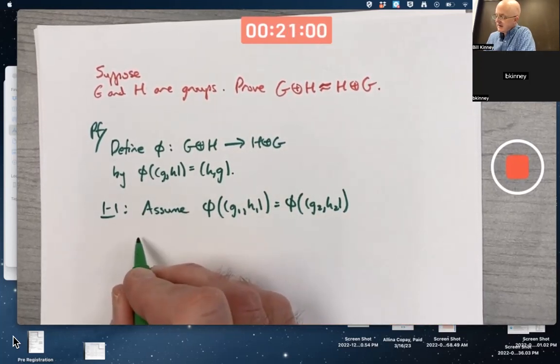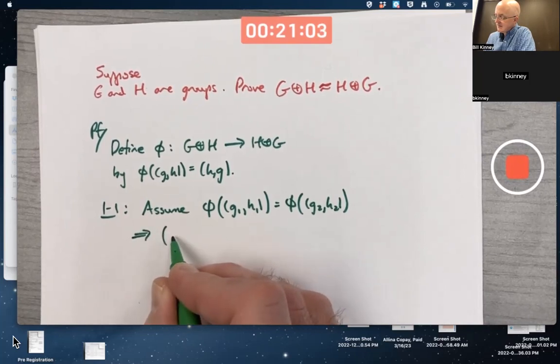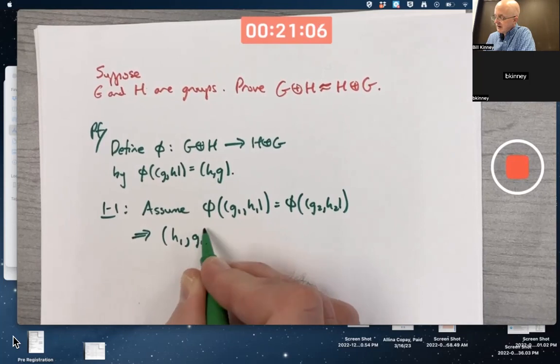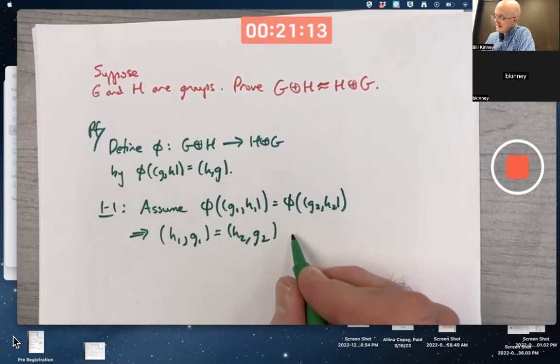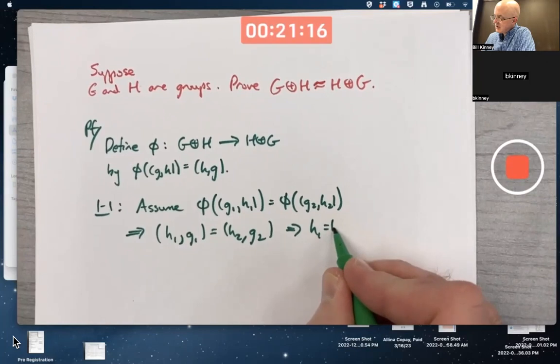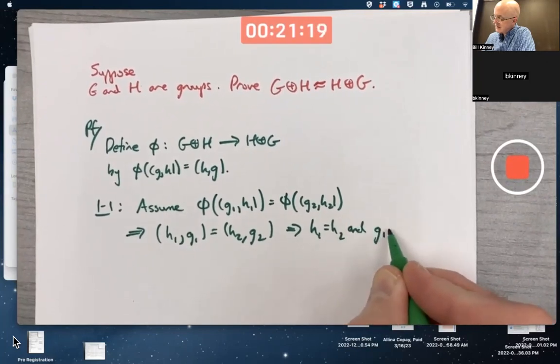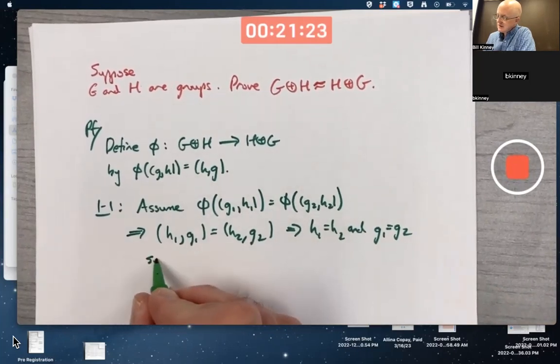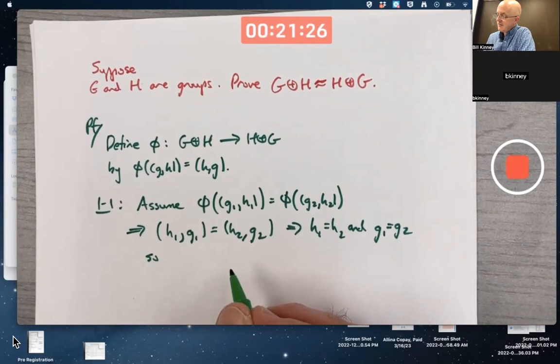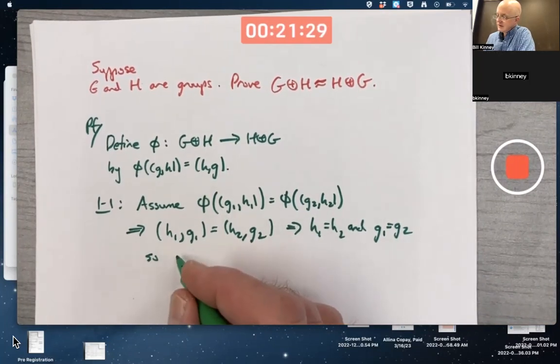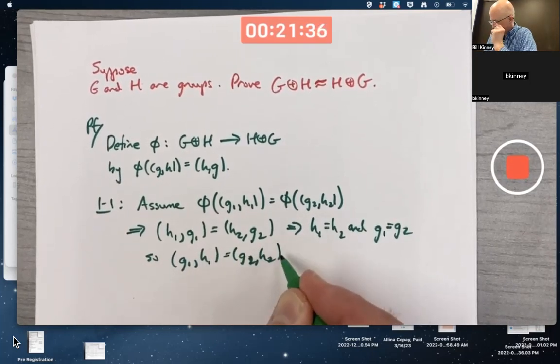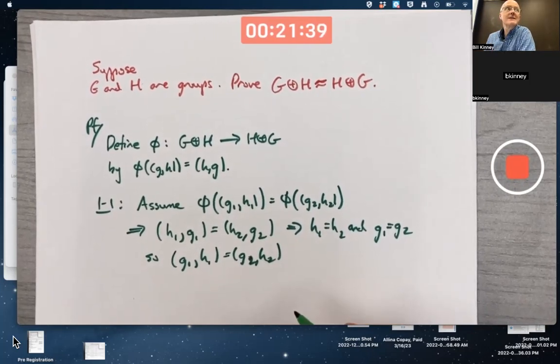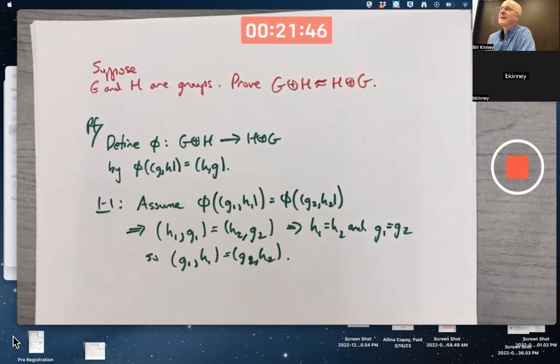Assuming this, based on the formula, implies that H1 comma G1 equals H2 comma G2. In other words, H1 must be H2, and G1 must be G2. So if you do switch around the order of the components of the ordered pairs, you still get equality. G1 comma H1 equals G2 comma H2. Does that make sense? Is that what you did? Smile. Hopefully, that's what you did.